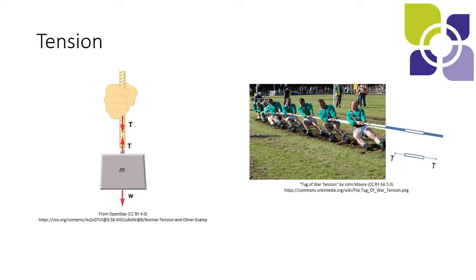So just for another example of where you can see tension, if you imagine holding up a weight with a piece of rope, you can draw a free body diagram for the weight. So the weight has a force of gravity pulling it downwards, you label that W or I'll keep consistent and label it Fg.